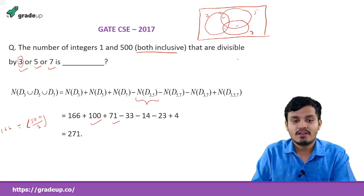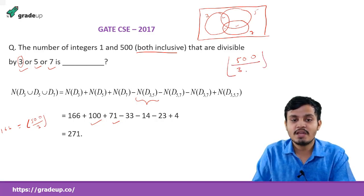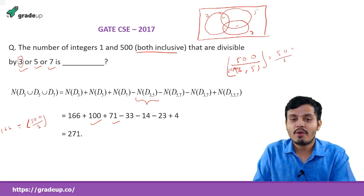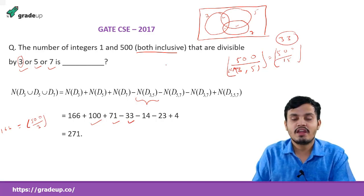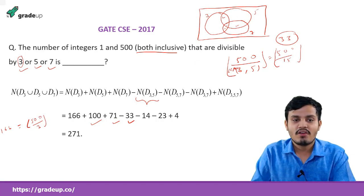To find numbers divisible by both 3 and 5, I do 500 divided by LCM of 3 and 5. LCM of 3 and 5 is 15. 500 divided by 15 is 33. That is written here — it is 33. Now the number divisible by 5 and 7, and divisible by 3 and 7, are computed similarly.